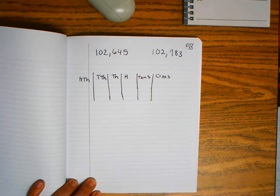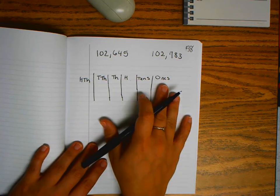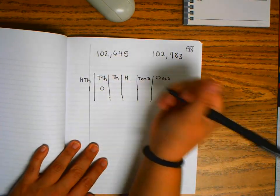If we were comparing these two numbers, the first thing I would do is make my place value chart and then put those numbers into it.